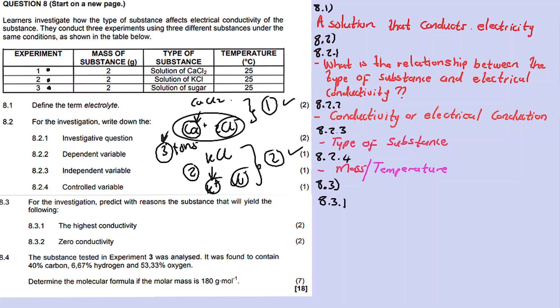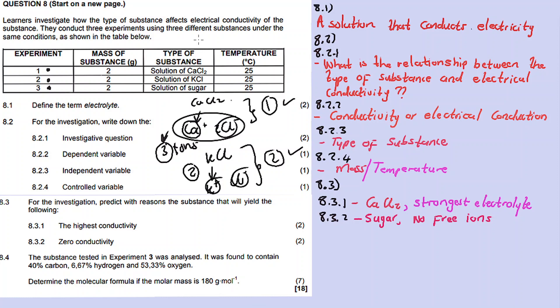The substance predicted to give the highest conductivity is calcium chloride. The reason is that it is the strongest electrolyte - it has the highest number of ions. The substance predicted to give zero conductivity is sugar, because no ions are formed when sugar dissolves.